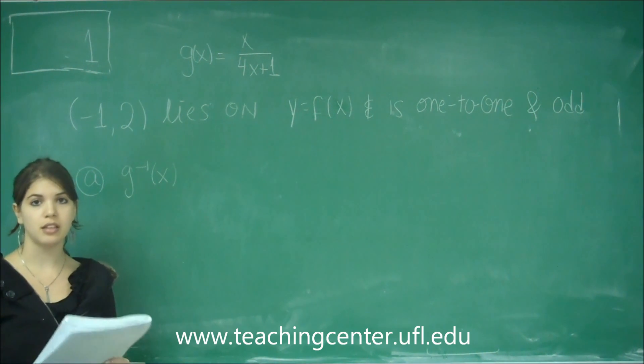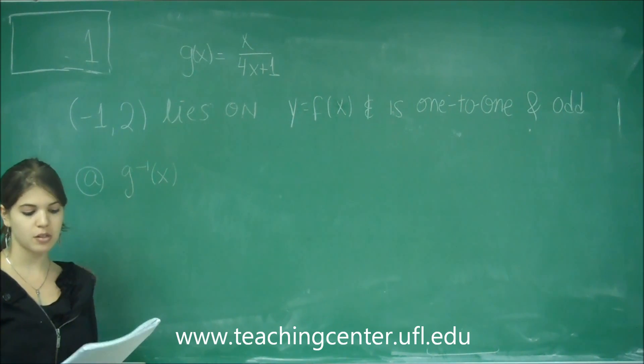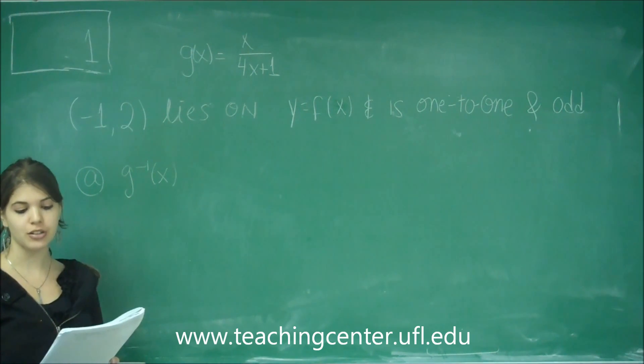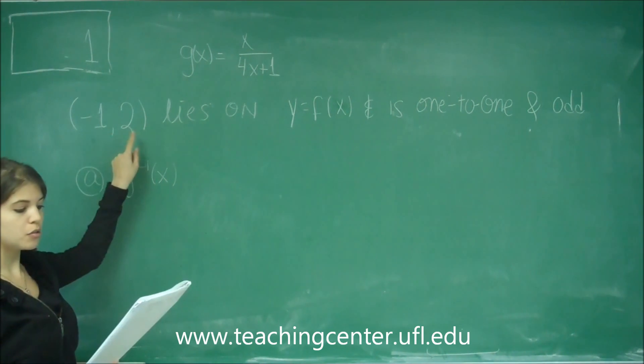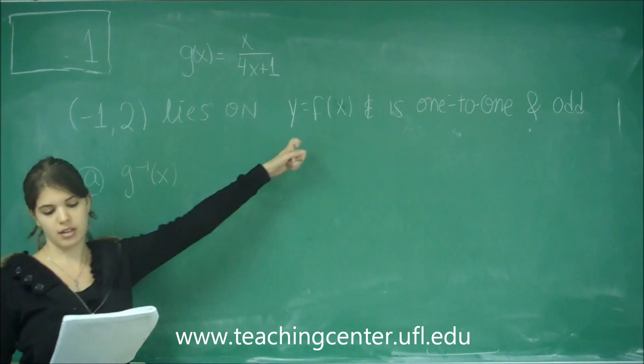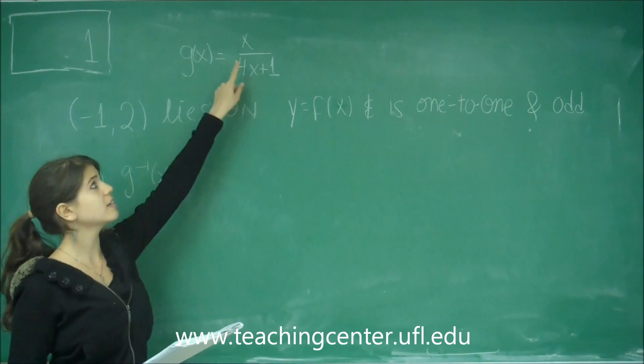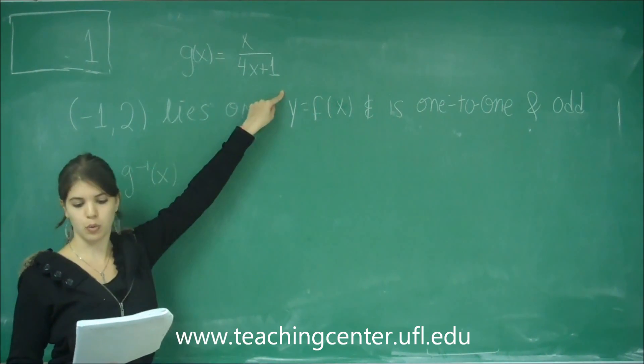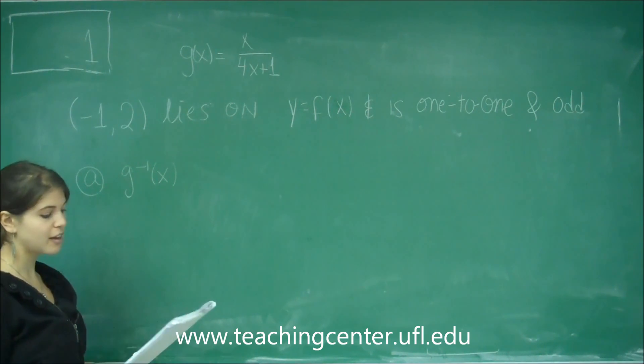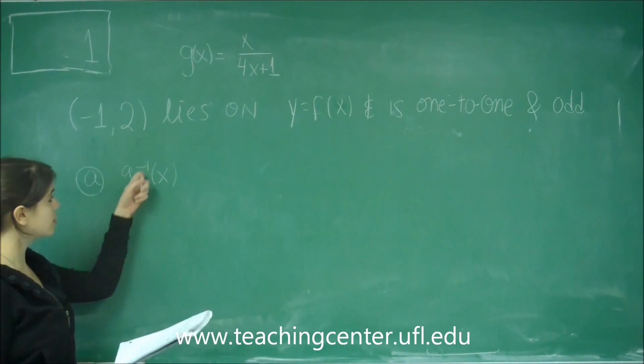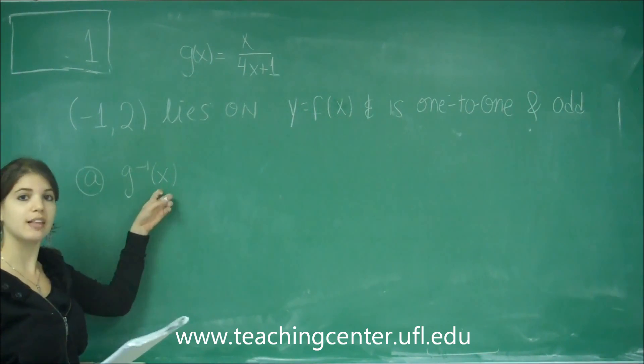Problem number 1 for the free response says: Suppose that f is a 1 to 1 odd function such that the point (-1, 2) lies on its graph and that g(x) is x over 4x plus 1. It's got three parts. The first part says find g to the negative 1 of x, so you have to remember that this means you want to find the inverse of g.